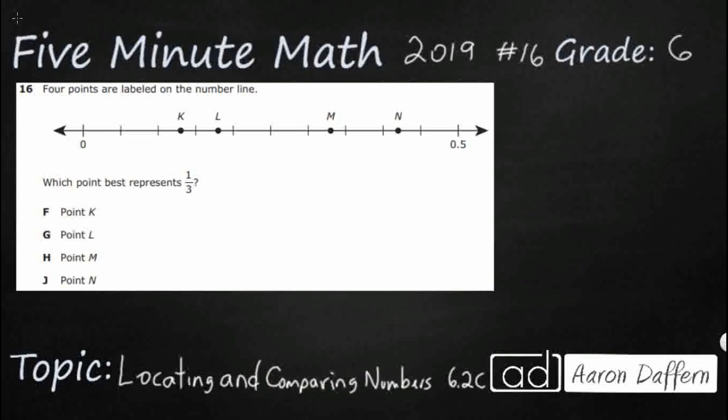We've got four points on this number line: K, L, M, and N, and we simply need to find the one that best represents one-third.